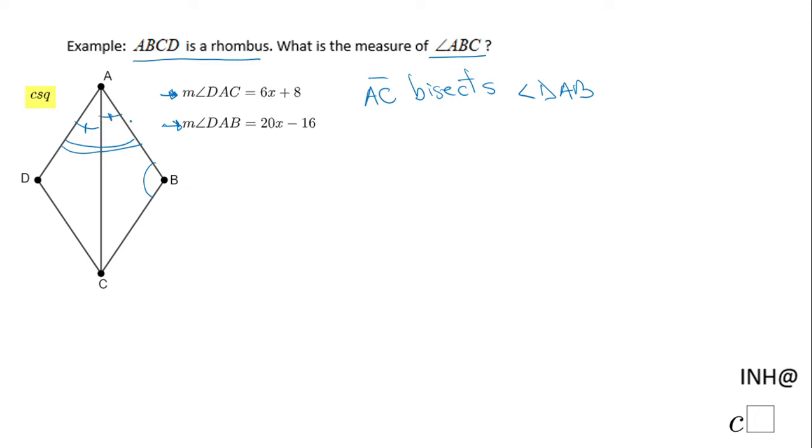Because they are congruent and they have the same measure, we can also write another relation regarding these angles and the angle DAB. I can write the measure of angle DAB equals 2 times the measure of any of those two angles, DAC or BAC.